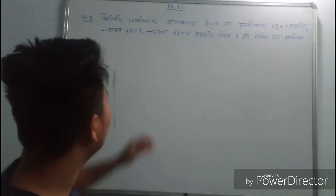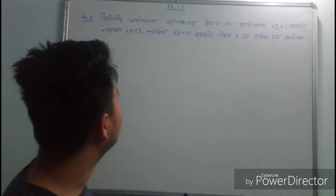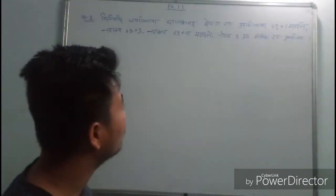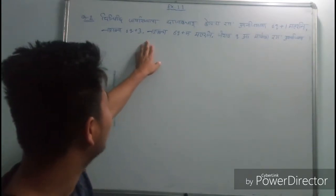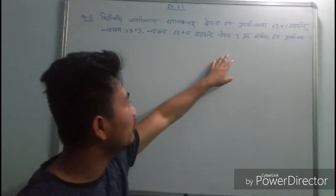So, equation number 2, we are going to talk about 6q plus 1, 6q plus 3, 6q plus 5.